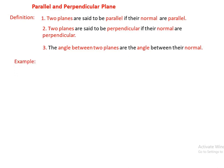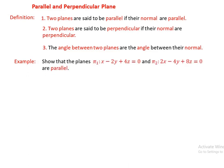So let's give an example. Show that the planes pi1: x minus 2y plus 4z equals 0 and pi2: x minus 4y plus 8z equals 0 are parallel. Let's verify pi1 and pi2.